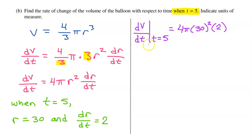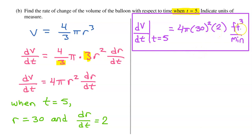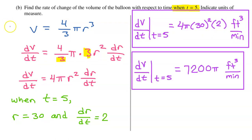Let's practice our notation. Evaluating at t equals 5, substituting r equals 30 and dr/dt equals 2: dv/dt at t equals 5 equals 4 pi times 30 squared times 2. We are talking about the change in volume with respect to time, so we get cubic feet per minute. Simplifying, the rate of change of the volume when t equals 5 is 7,200 pi cubic feet per minute.